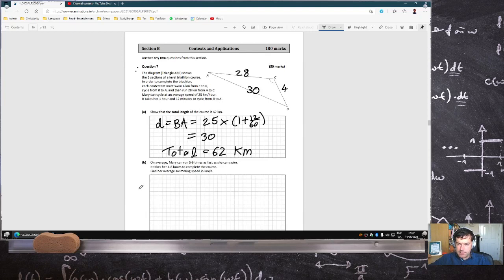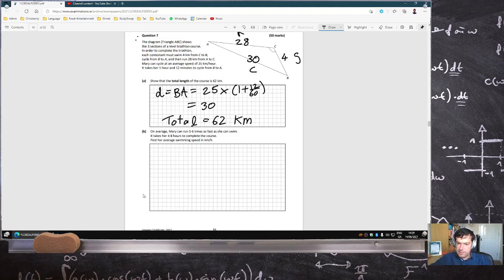On average, Mary can run 5.6 times as fast as she can swim. Let me just make sure I don't lose track of things here. Swimming is the 4, cycling is the B to A, and the running is the 28. And she can run 5.6 times as fast as she can swim. The time is the distance over the speed. So first, it's 4 over her swimming speed, which we'll call x. And then it'll be 28 over her running speed, which will be 5.6x. And then lastly, it's the 30 over 25.